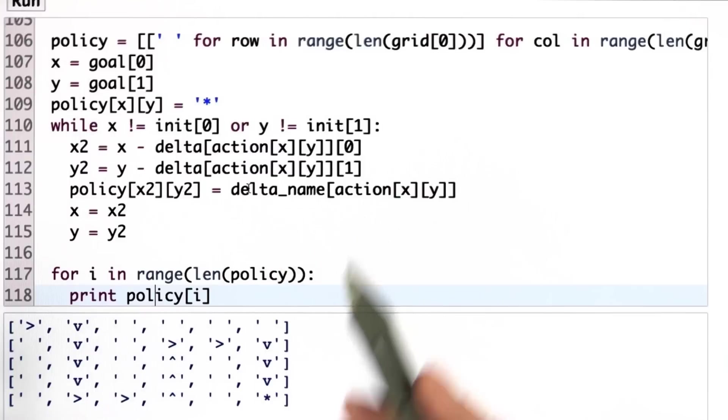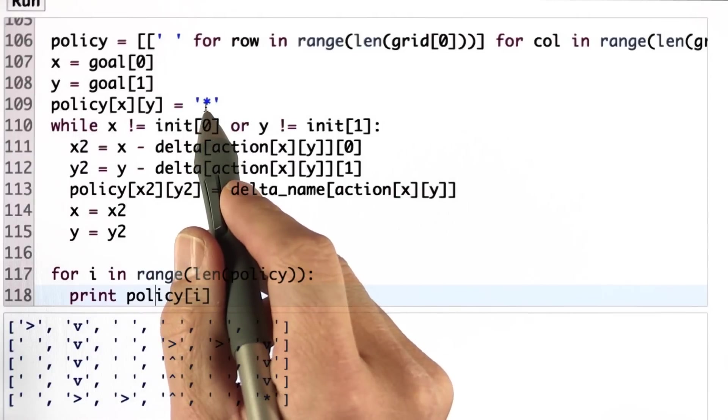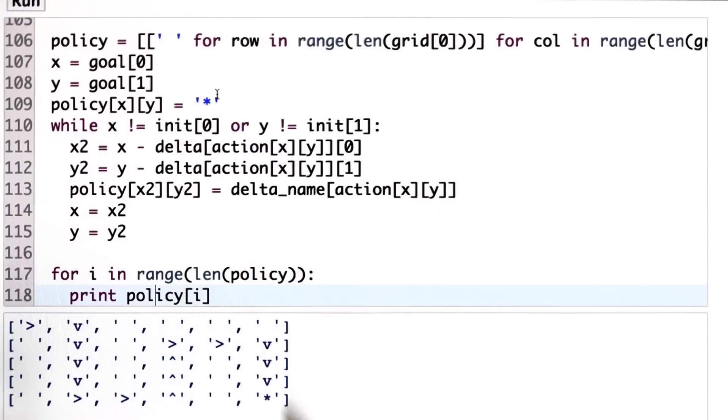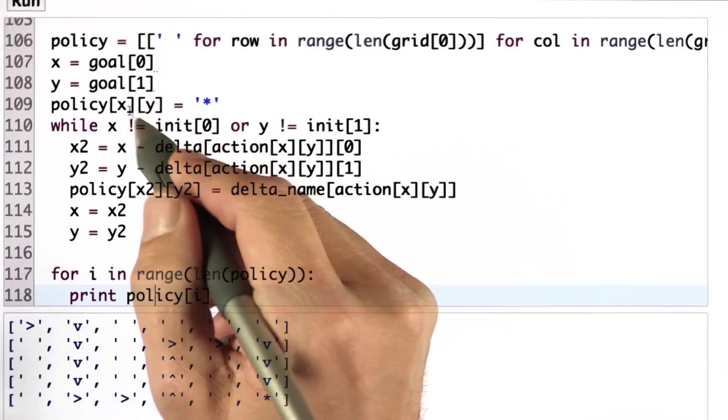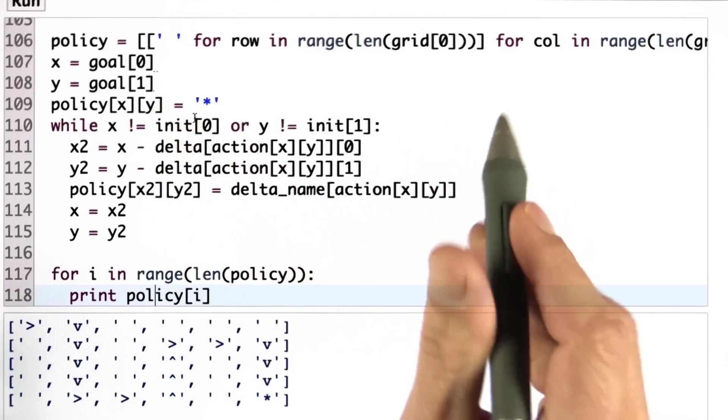In that field, I set the location of the goal explicitly to be the star, which is happening over here. And then I go from the goal backwards.